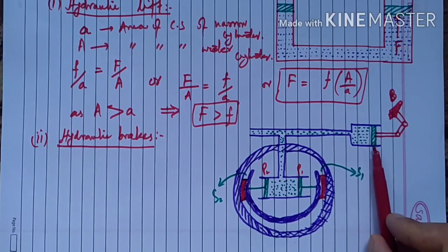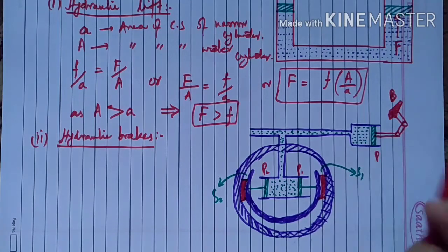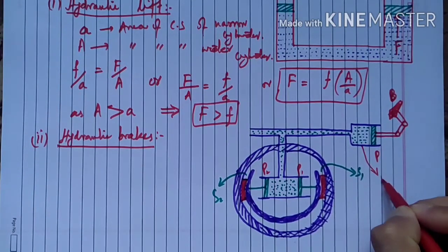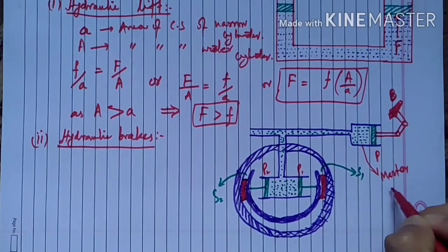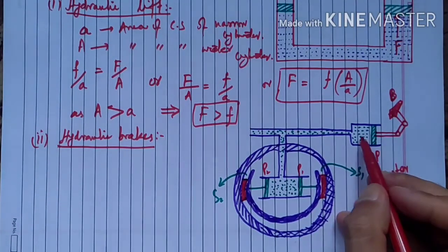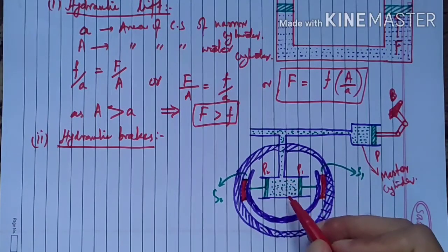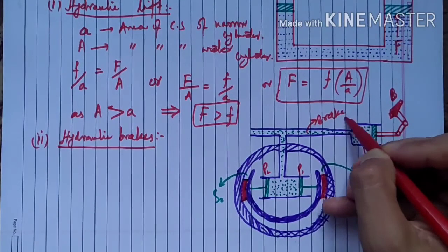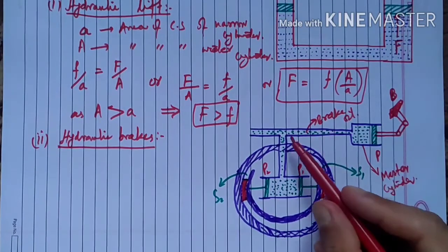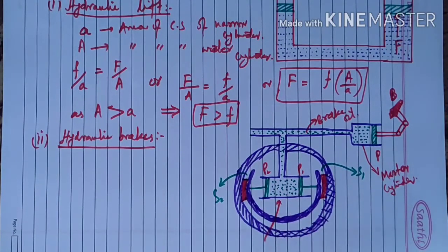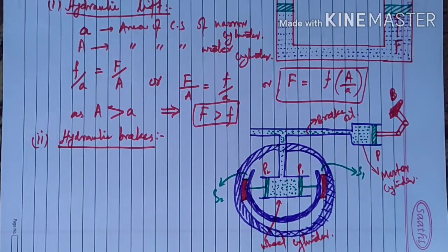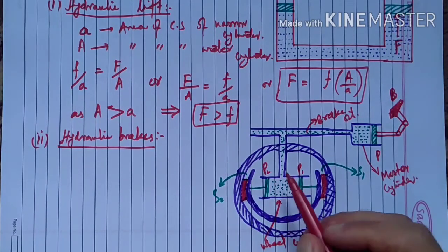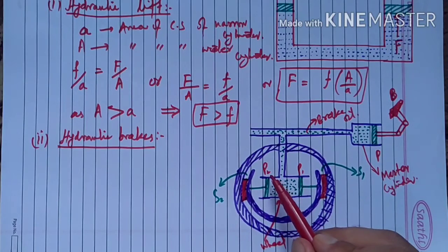This cylinder is called the master cylinder. It contains brake oil. The brake oil connects to another cylinder called the wheel cylinder. In the hydraulic brake system, we use two cylinders: the master cylinder and the wheel cylinder.